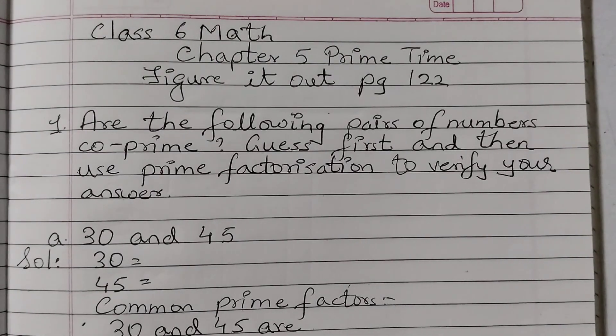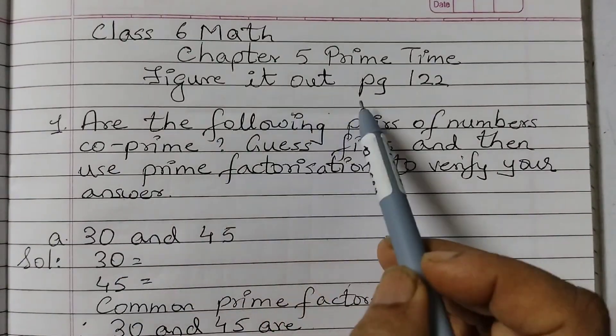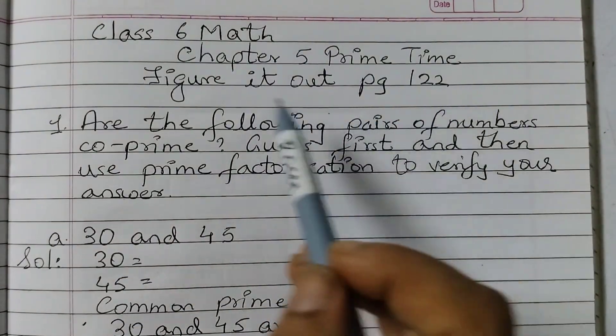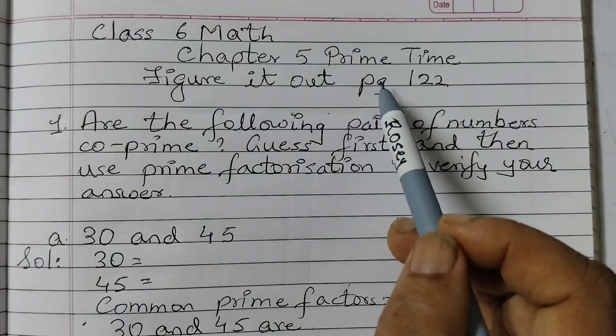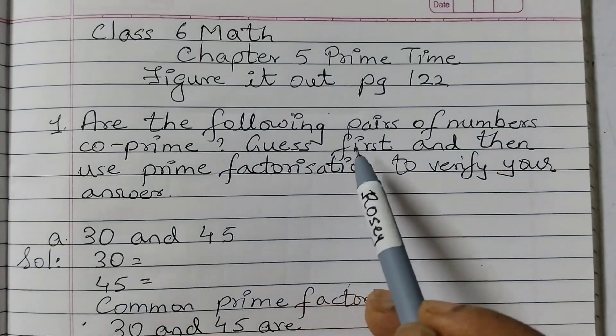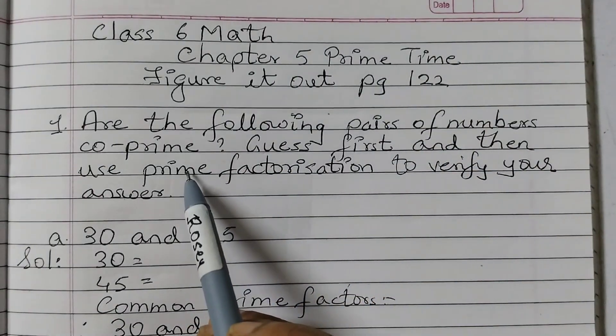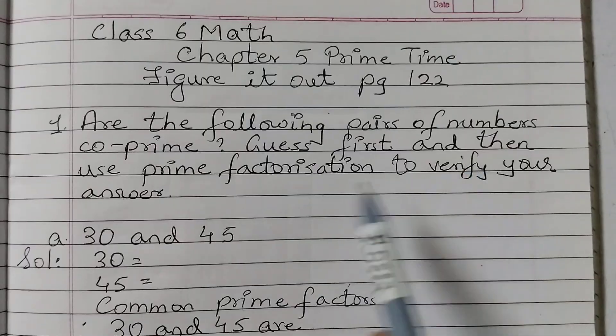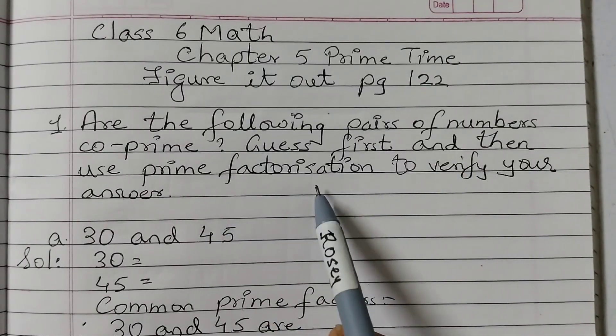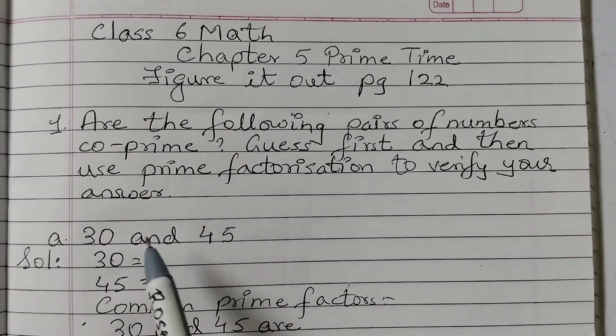Hello students, welcome back to Rosi Maths class. In this video we are going to solve question number 1, figure it out, page number 122 from chapter number 5, prime time. Are the following pairs of numbers co-prime? Guess first and then use prime factorization to verify your answer.